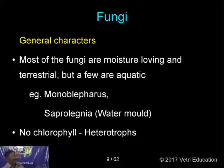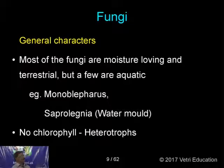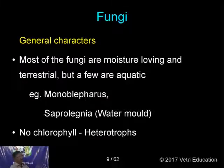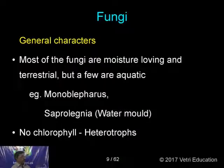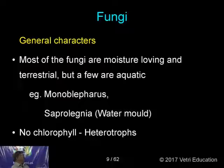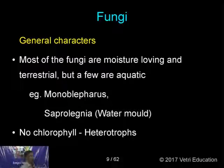Regarding the general characters of Fungi: most Fungi are moisture-loving — wherever there is a little moisture, you can find fungi. They are terrestrial, that is, on the land. Very few species are aquatic, found in water — examples: Monoblepharis and Saprolegnia, which are water fungi. Saprolegnia is also known as water mold. Since they do not have chlorophyll, they are all heterotrophs.